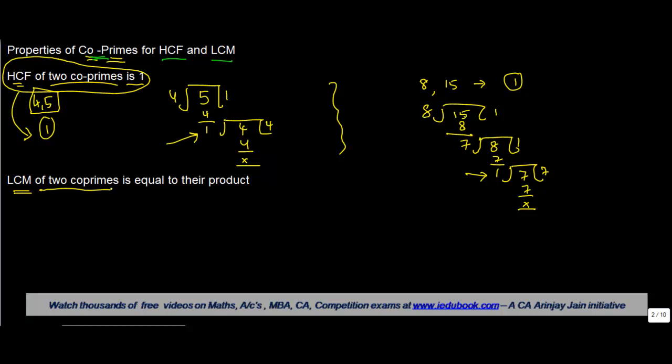Now what is the other property? It says LCM of two co-primes is equal to their product. Let's find out. Let's take these numbers only, 4 and 5. Let's divide this by 2, so you get 2 here and 5 here. Again by 2, 1, 5. Again by 5, 1, 1.